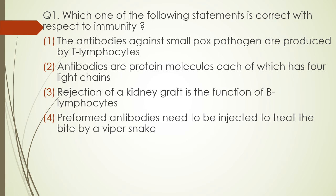The correct answer is option four. Preformed antibodies need to be injected to treat the bite of a viper snake. Antibodies against smallpox pathogen are produced by B lymphocytes, not T lymphocytes. Antibodies are protein molecules each of which has two light chains and two heavy chains, not four light chains. And rejection of kidney graft is a function of cell-mediated immunity, that is T lymphocytes, not B lymphocytes.